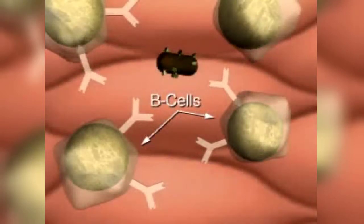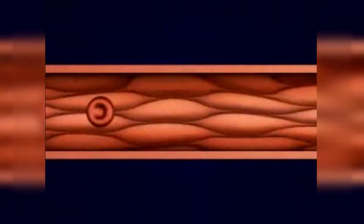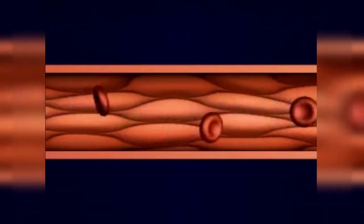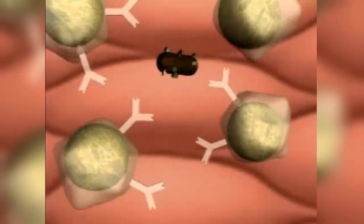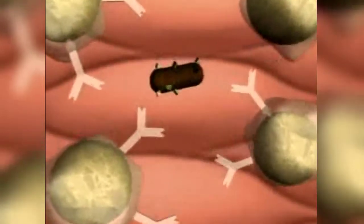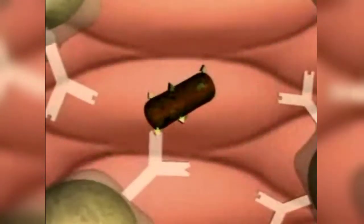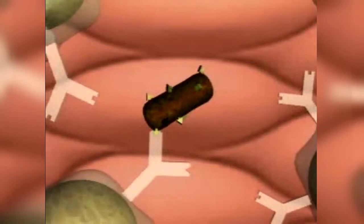B cells are one of the two types of white blood cells that make antibodies. When a bacterial cell enters the bloodstream, proteins on its surface act as antigens and trigger a response by the immune system. These antigens will bind to the unique B cells that have the corresponding antibodies on their surfaces.